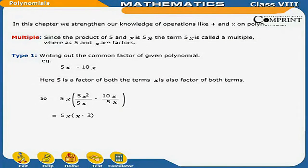Chapter 7: Polynomials. In this chapter, we strengthen our knowledge of operations like addition and multiplication on polynomials. Since the product of 5 and x is 5x, the term 5x is called a multiple, whereas 5 and x are factors.